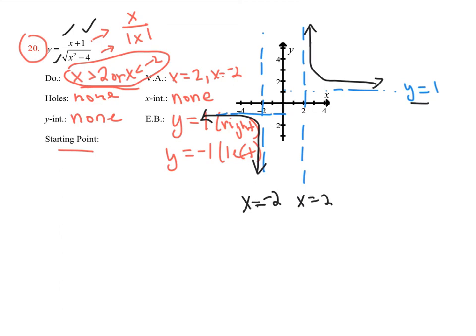To do curve sketching: follow the recipe, find the attributes of the graph, put them all together, and figure out where the graph goes at different times. Thank you very much. This is the end of section 1.3, second part.